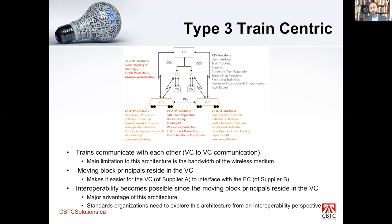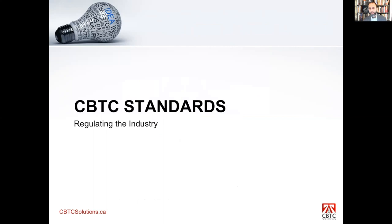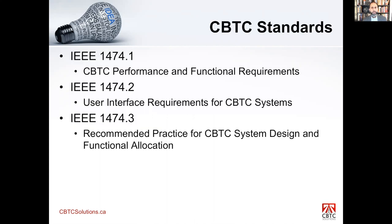Those are the three architectures: CBI based, non-CBI based, and train centric. CBI and non-CBI are currently the most popular. The vehicle-centric architecture — I'm aware Alstom is working on something in southern France — should be coming online soon. CBTC standards: there are four standards, but I will cover three — IEEE 1474.1, 1474.2, and 1474.3 — covering CBTC performance and functional requirements.